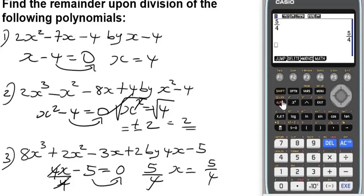Delete everything. Now let's input the polynomial: 8x³ + 2x² - 3x + 2. Press EXE. The result is 17. So the remainder of this polynomial is 17.